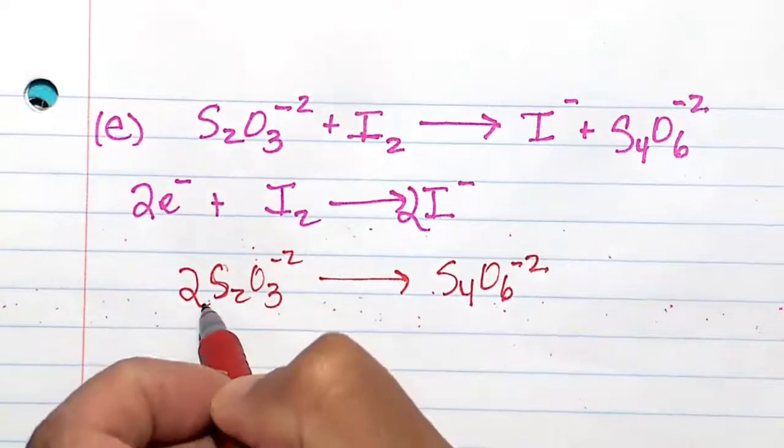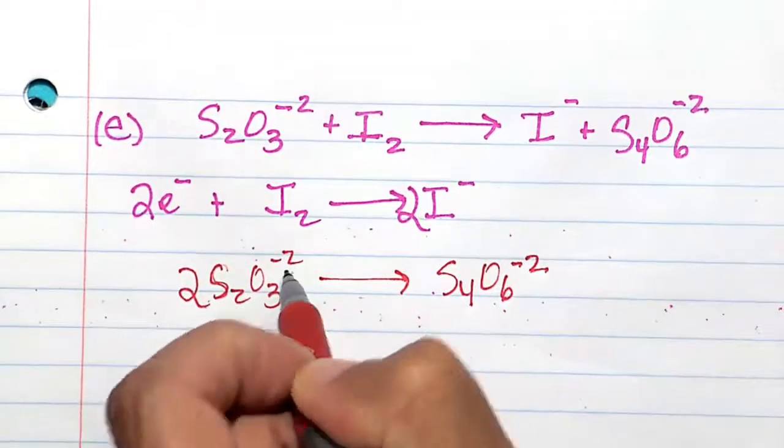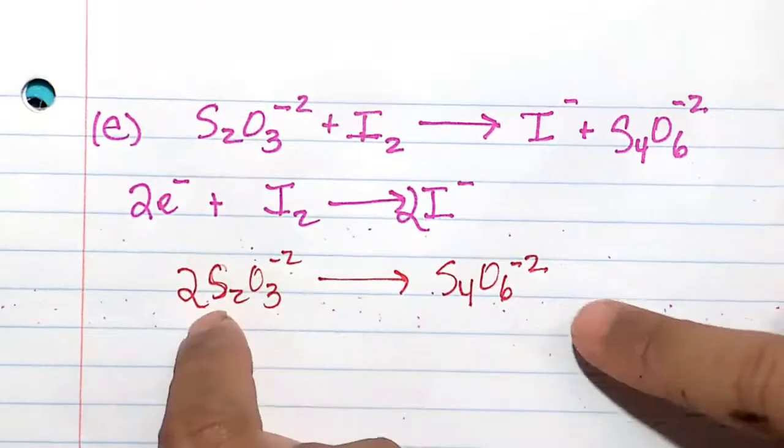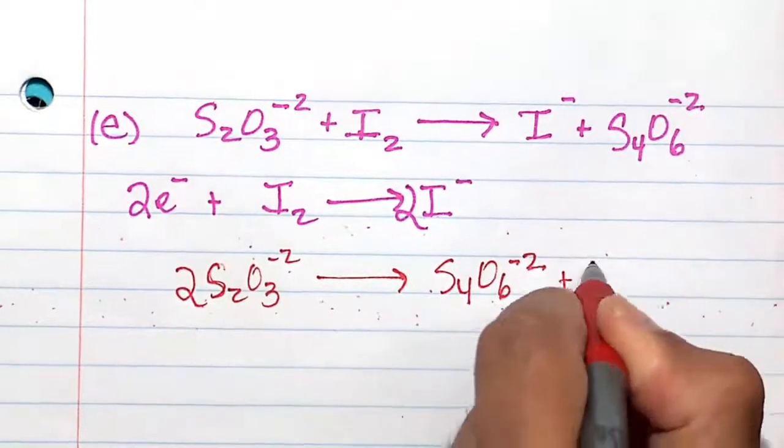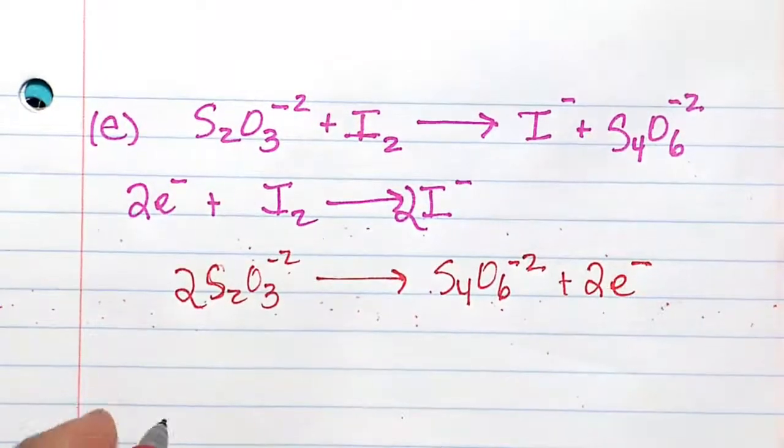Minus 2 times 2 is minus 4, and this is minus 2. So we have minus 4 charge on the left, minus 2 charge on the right. So it looks to me like we add 2e- here.